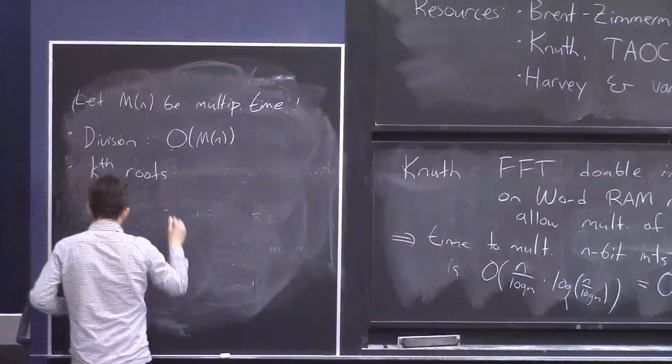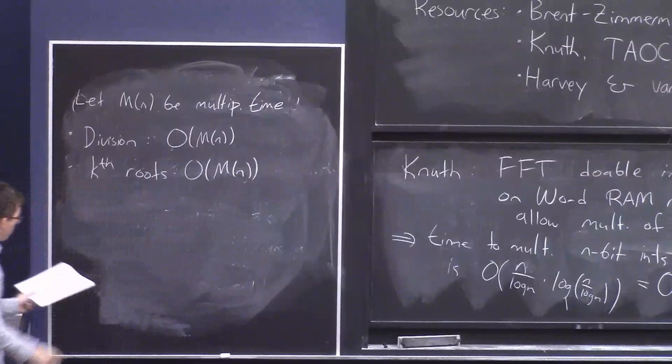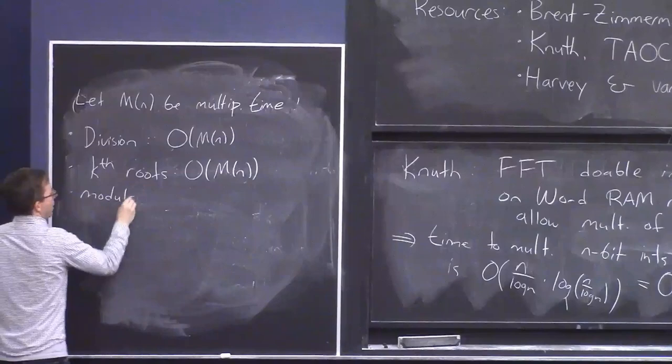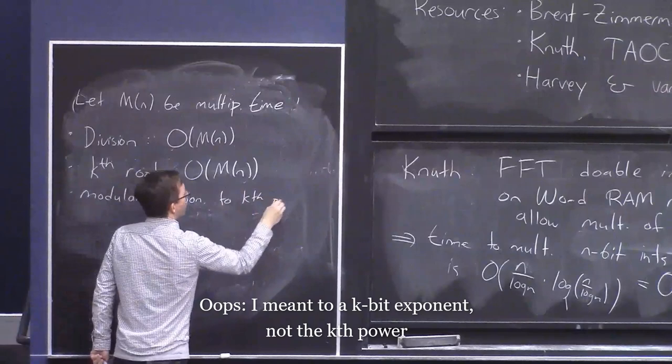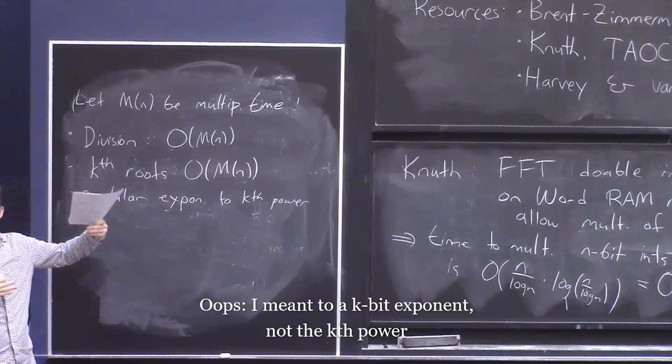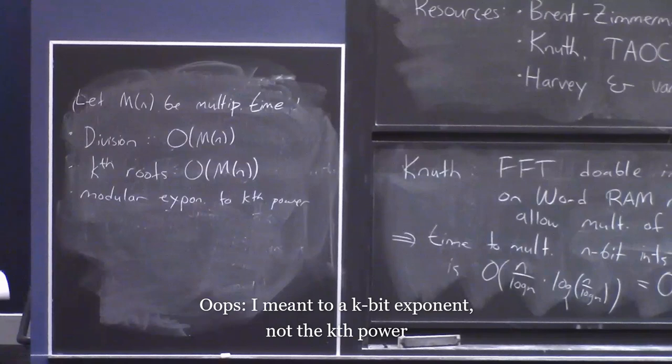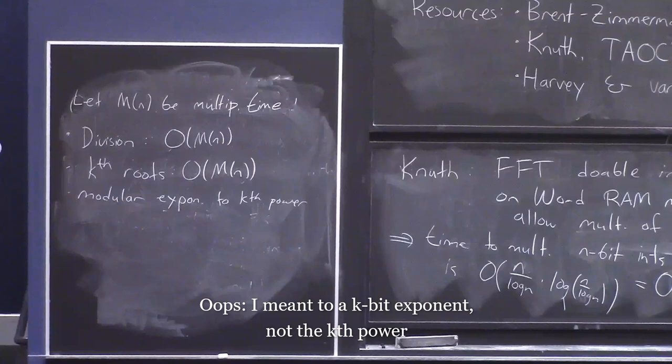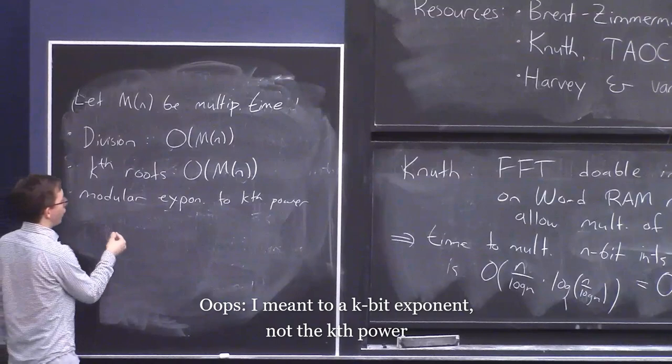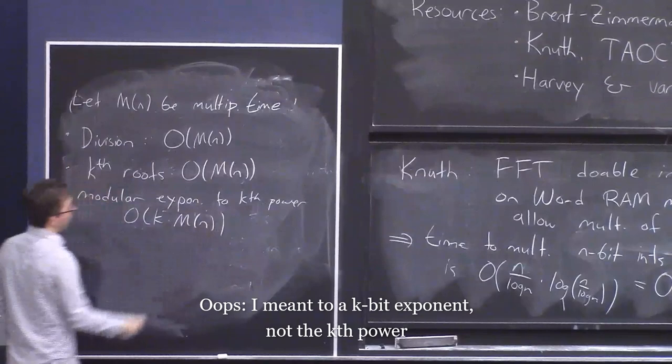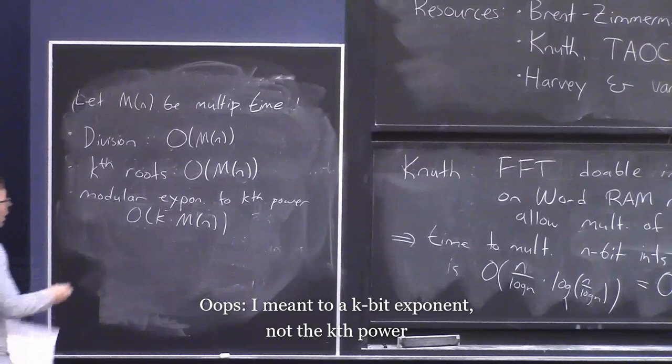OK, you can also do kth roots, so square roots, cube roots, et cetera, all in order m of n time. Again, with Newton's method. You can do modular exponentiation to kth power. Of course, you cannot do exponentiation like a to the power of b in polynomial time at all, because the answer is too large to fit in a polynomial amount of space. But if you do like a to the power of b mod 2 to the w, or mod any number actually, to keep the answer size small, then I'm sure you know you can do that efficiently. And this takes time order k times m of n. And this will be important in Shor's quantum factoring algorithm.